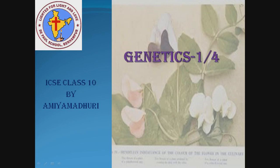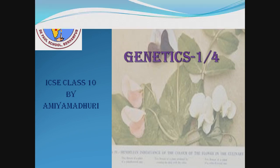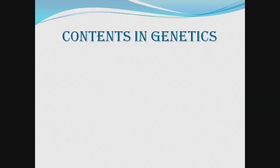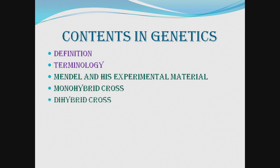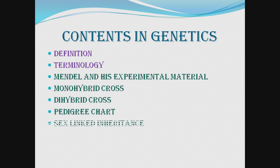Hello everyone, I am Amir. Today we are going to start our third chapter, i.e., Genetics. Here we are going to discuss some basic things about genetics: definition, some terms related to genetics, Mendel and his experimental material, monohybrid cross, dihybrid cross, pedigree chart, sex linked inheritance, and mutation.